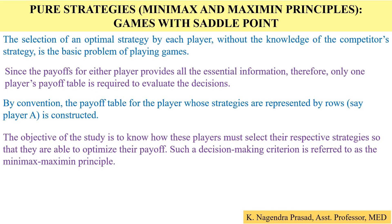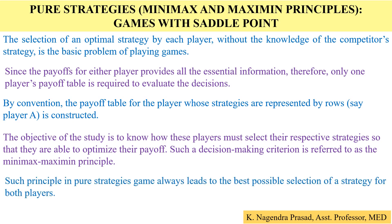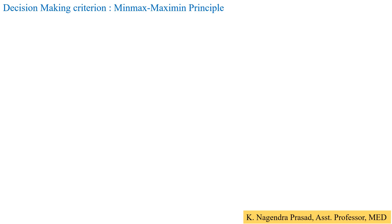Such a decision-making criterion is referred to as the minimax and maximin principle. This principle in a pure strategy game always leads to the best possible selection of a strategy for both players, so the decision-making criterion in pure strategy is the minimax and maximin principle.